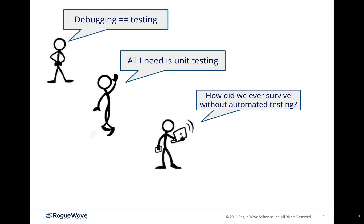But doing it by hand isn't really enough. Moving into agile, extreme programming, and continuous integration, we realized you've got to automate everything — your unit tests, functional tests, and integration tests. Basically anything that could possibly go wrong needs to be tested with an automated tool; otherwise you can't move fast enough with today's time-to-market pressure. You can't rely on a QA department to do things by hand — all of it, including UI testing, has to be automated.